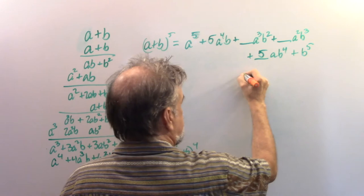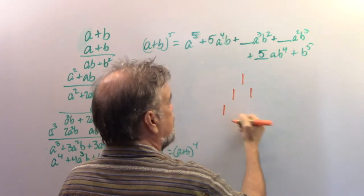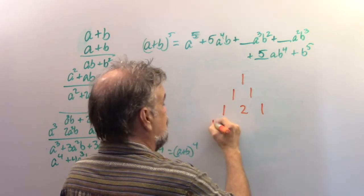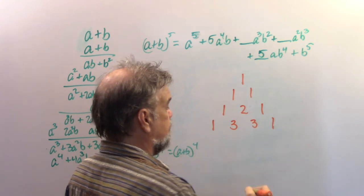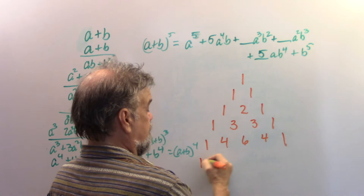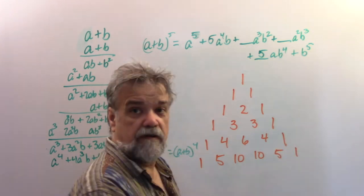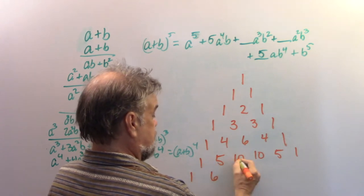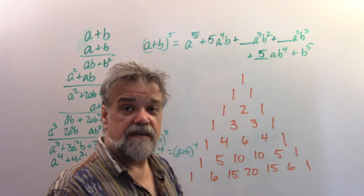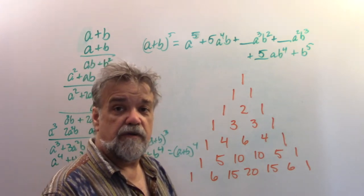Start with a 1 at the top. Put two 1s below to form a triangle. For the next row: 1, then 1+1=2, then 1. Next: 1, 3, 3, 1. Then: 1, 4, 6, 4, 1. Then: 1, 5, 10, 10, 5, 1. Then: 1, 6, 15, 20, 15, 6 — wait, 5+1=6 — and 1. The triangle is infinitely long; you keep creating rows recursively, using the row above it to generate each new row.